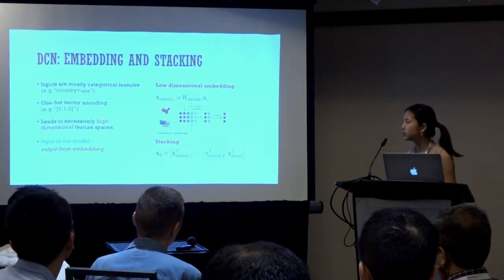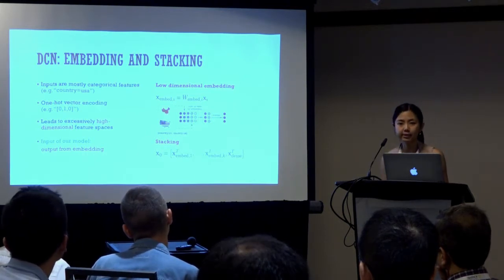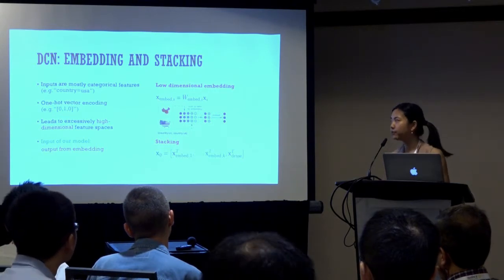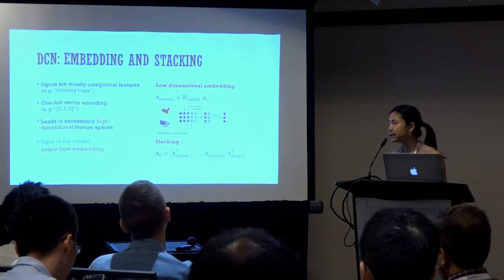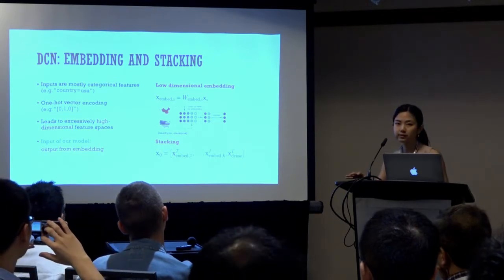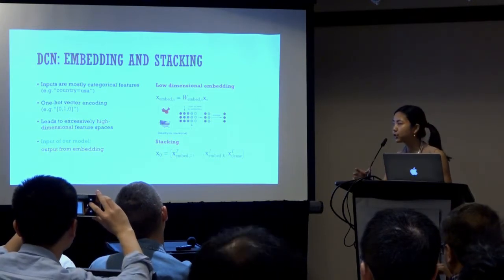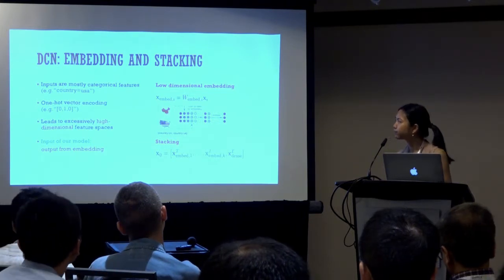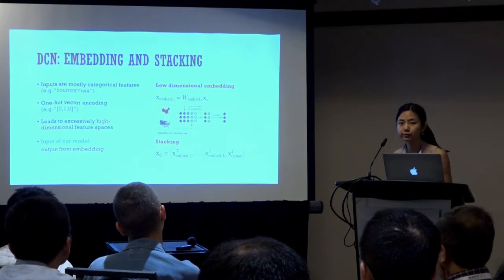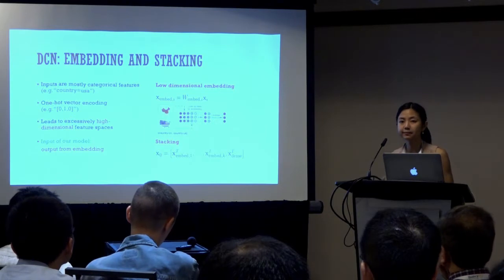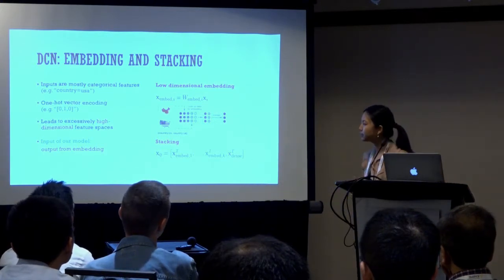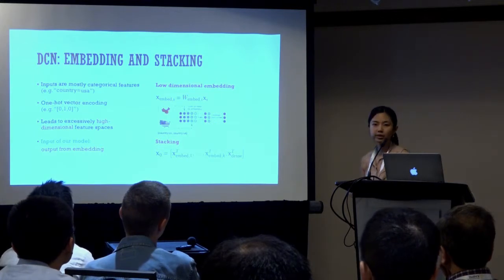Let's start with the embedding and stacking layer. When considering web-scale applications, the inputs are mostly categorical features, and one common practice is to encode them into one-hot vectors. However, this always leads to excessively high dimensional space. Our model takes the output from embedding as input to avoid manual feature engineering — different from the wide and deep model, where the linear model takes raw sparse features as input. Specifically, we apply a technique called low-dimensional embedding that projects your sparse input from high dimension xi to a low-dimensional dense vector x-embedded. All these embedding vectors are stacked together along with the normalized dense input and fed to the network.